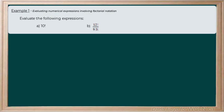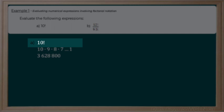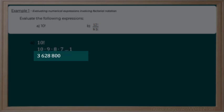Let's begin by looking at a few simple numerical expressions. Example 1, part A asks us to evaluate 10 factorial. That looks like an easy one — all we have to do is use our factorial button on our calculator to evaluate it. But just to be sure that we understand what's going on, recall that 10 factorial means starting at 10 and writing out the rest of the decreasing consecutive factors: 10 times 9 times 8 times 7, continuing all the way down to 1. When I evaluate that using the factorial button on my calculator, I find that it equals 3,628,800.